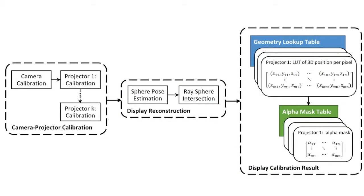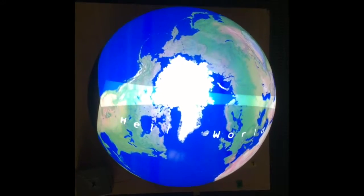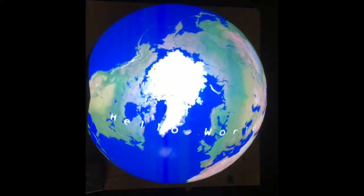We use ray-sphere intersection to locate the position of the pixels on the display. This results in several lookup tables that contain 3D positions of the display pixels. Using the calibration result, we align projections and create alpha masks to blend those images.